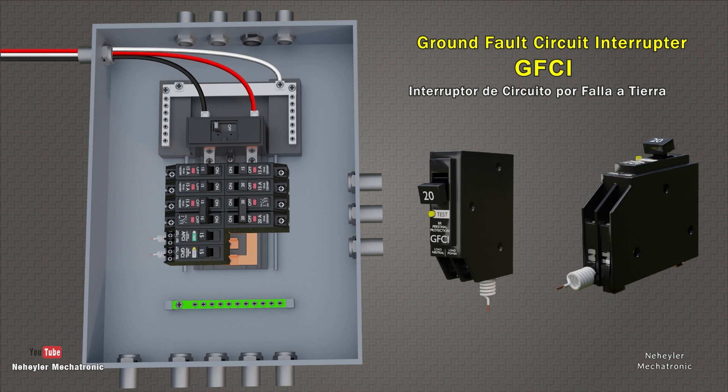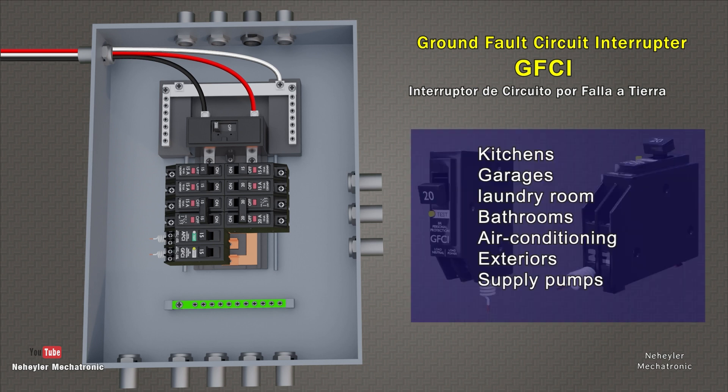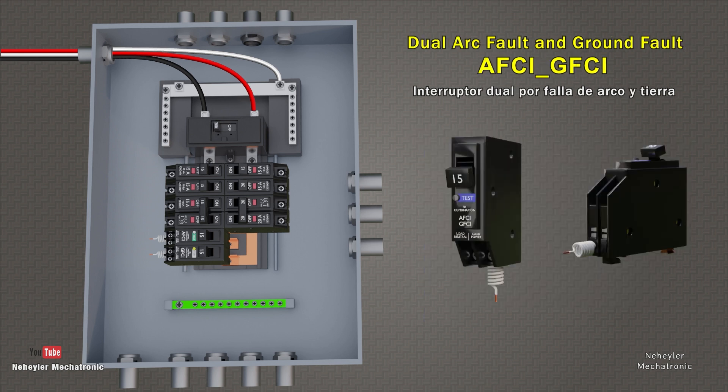According to the current National Electricity Code, it indicates that these devices should be used as protections in kitchens, garages, laundry rooms, bathrooms, air conditioning, among others. The electrical wiring is very similar to AFCI devices. It is also possible to find both protections in a single device, which are usually used for the kitchen circuit, laundry rooms, or other areas that require this double protection.